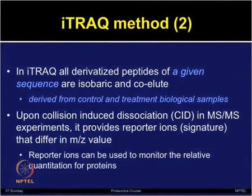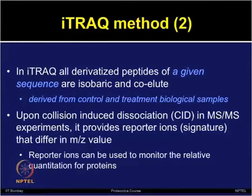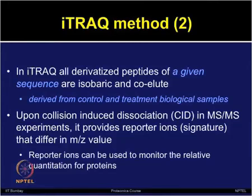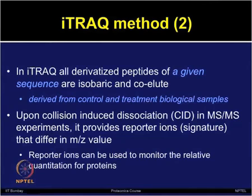In the iTRAQ method, the derivatized peptides of a given sequence are isobaric and they co-elute, because they are derived from control and treatment biological samples. In the mass spec, upon collision-induced dissociation during MS/MS experiments, it provides a reporter ion — a signature ion that differs in mass-to-charge ratio. The reporter ions are used to track quantitation and can be used to monitor the relative quantitation for proteins.